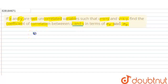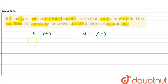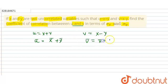u is given as x plus y, and v is given as x minus y. So u-bar, the mean value, will be x-bar plus y-bar, and v-bar will be x-bar minus y-bar. Okay?